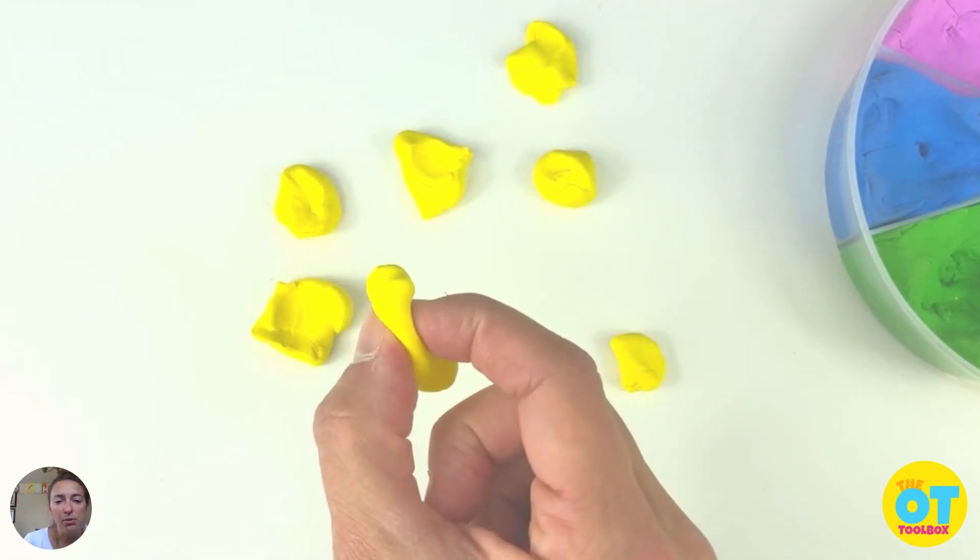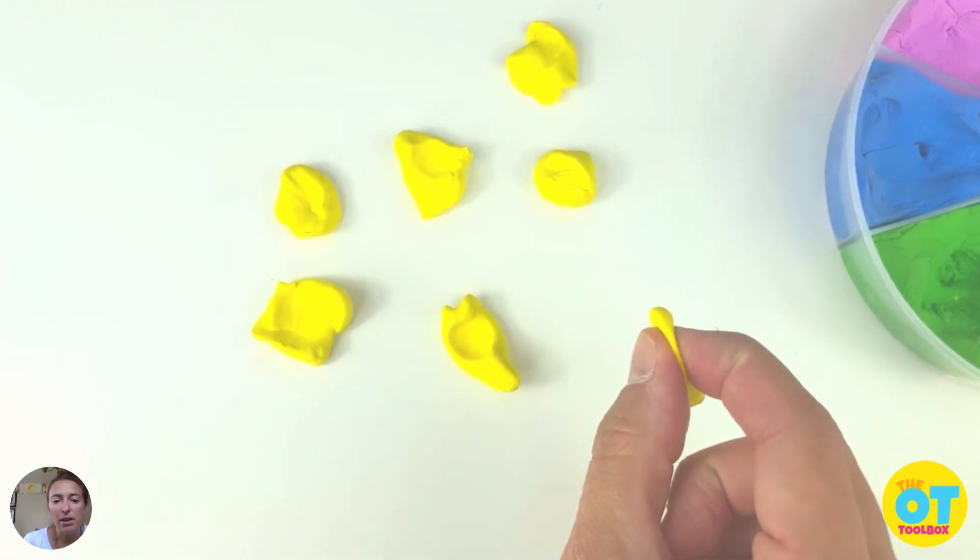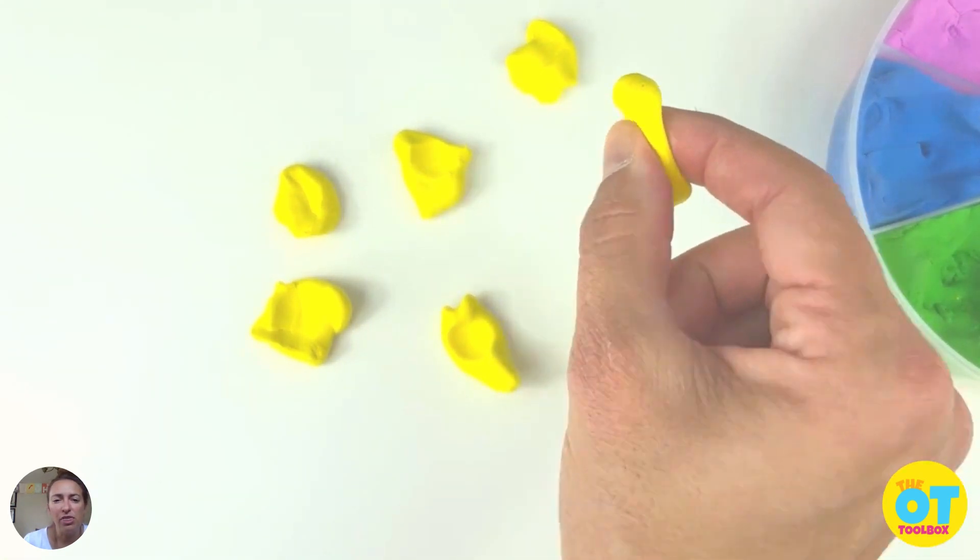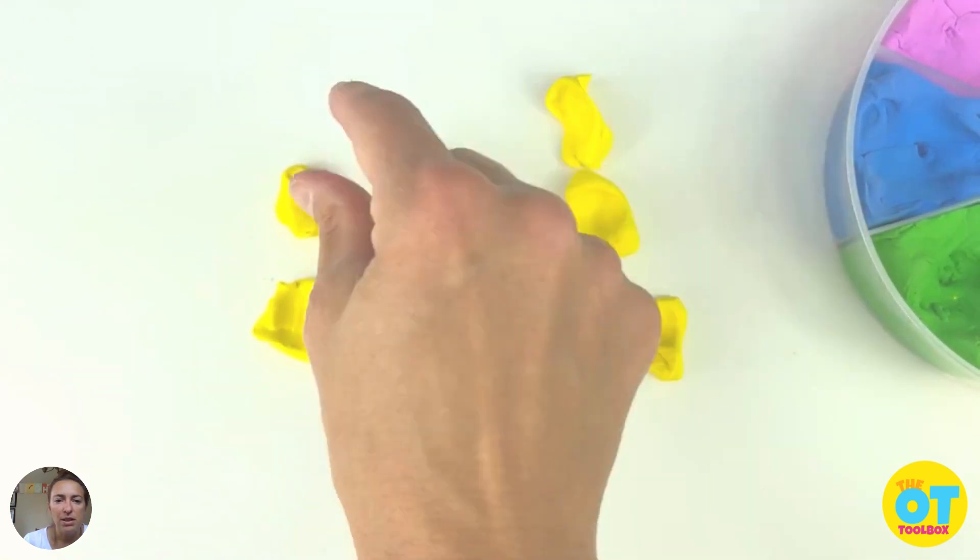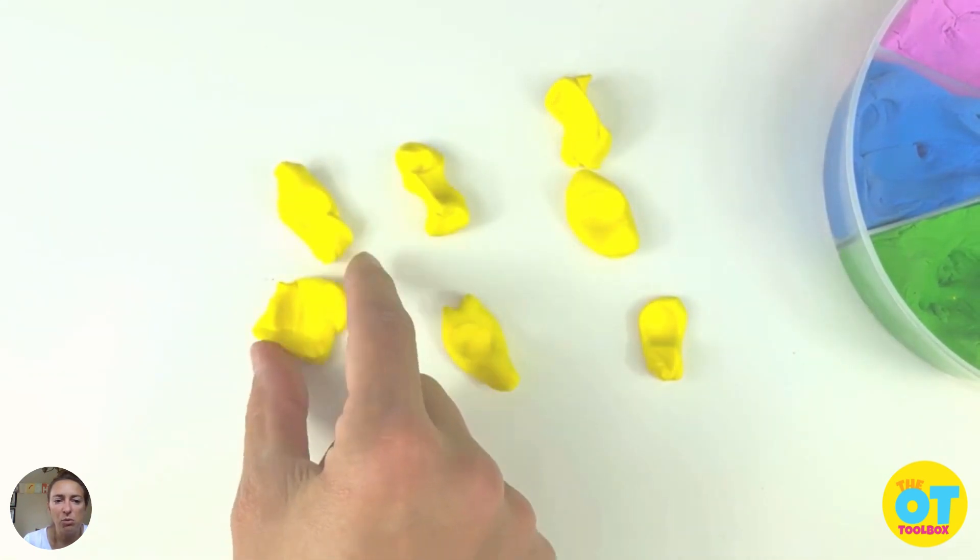Press those down into the table and then you're going to pick them up and do a little bit of finger and thumb opposition, pad to pad. Press each finger, each one.